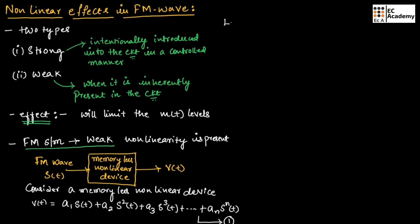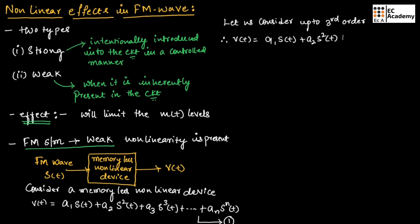From equation 1, let us consider up to third order. Therefore, we can write V(t) = A1·S(t) + A2·S²(t) + A3·S³(t). Let us take this as equation number 2. From equation number 1, we have considered only the third order components.